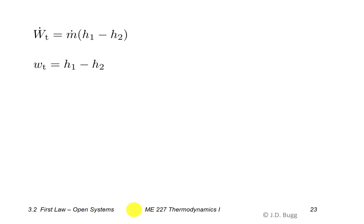We can divide both sides by mass flow rate to get the work produced per unit mass: w_T = H1 − H2. This is on a per unit mass basis, with units of kilojoules per kilogram — representing the work developed for each unit of mass flowing through the device.